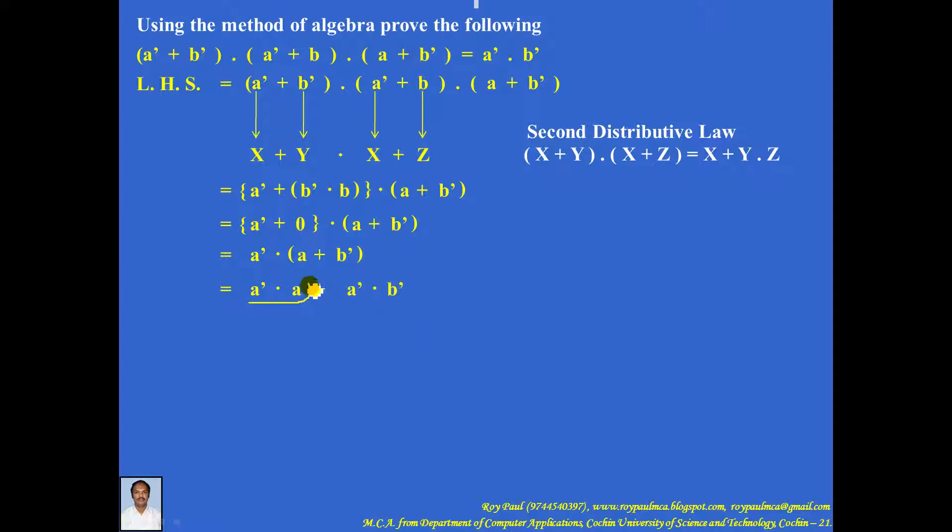Now by the complement rule, a into a' equals 0, and the remaining part stays as it is. Now by properties of 0, 0 plus a'·b' equals a'·b', which is equal to RHS. Therefore, LHS equals RHS, and the proof is complete.